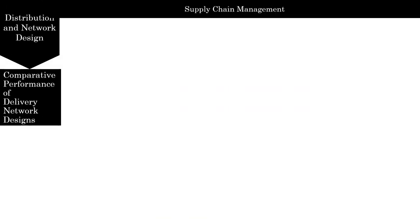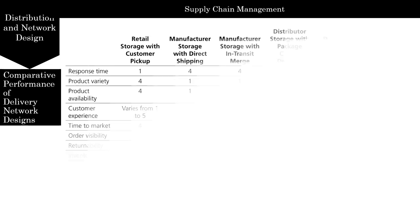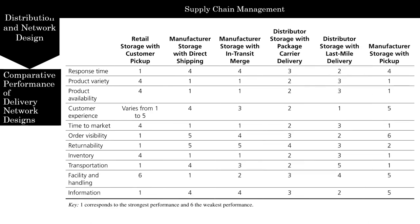A network designer needs to consider product characteristics as well as network requirements when deciding on the appropriate delivery network. The various networks we discussed in the previous lecture have different strengths and weaknesses. Here are the six different networks we talked about. Based on whether it is inventory, transportation, facility handling costs, or service requirements, they differ. The numbers here correspond to one for the strongest performance and six for the weakest performance.